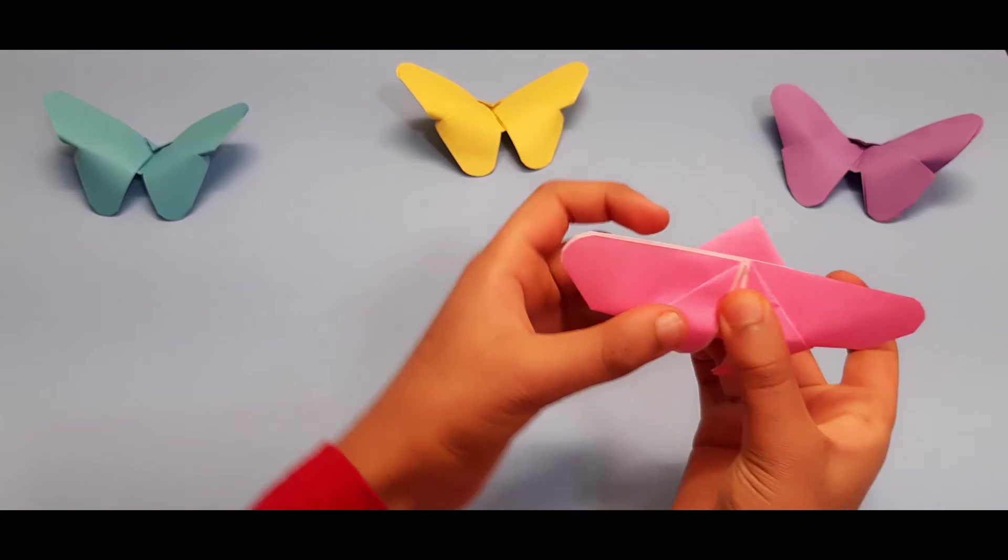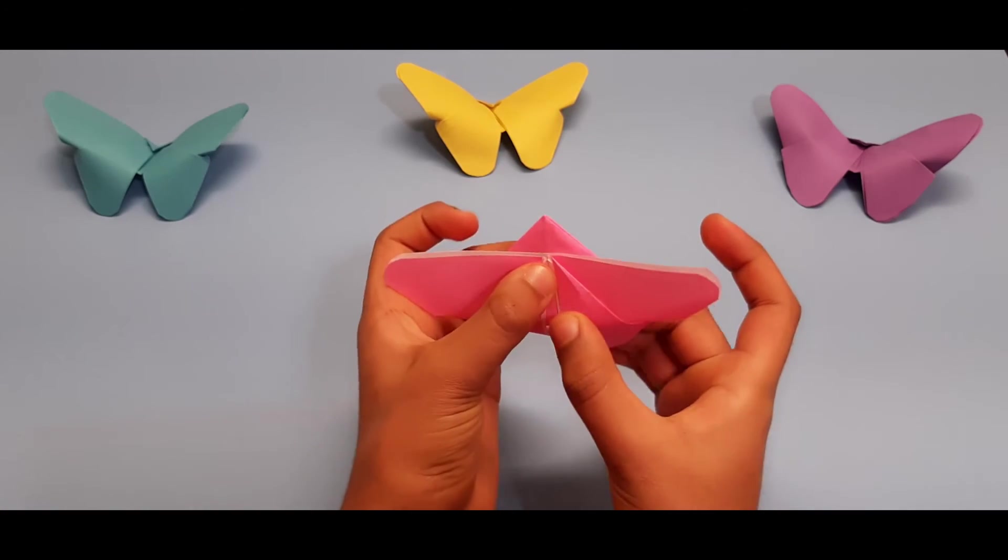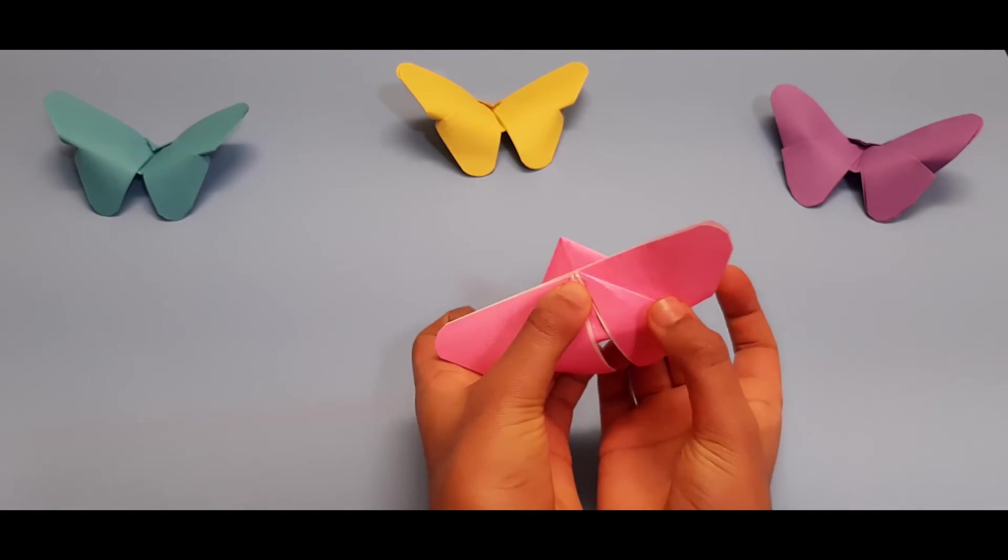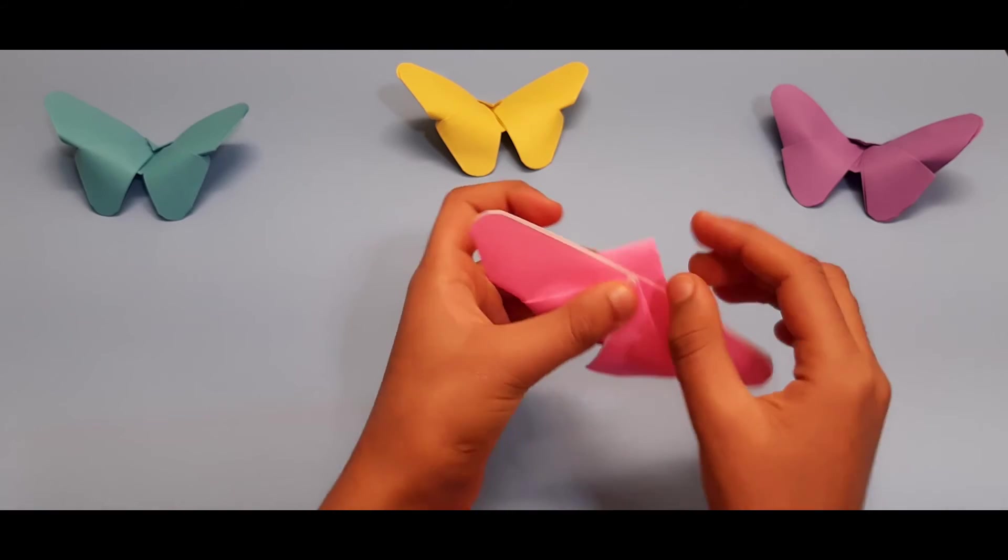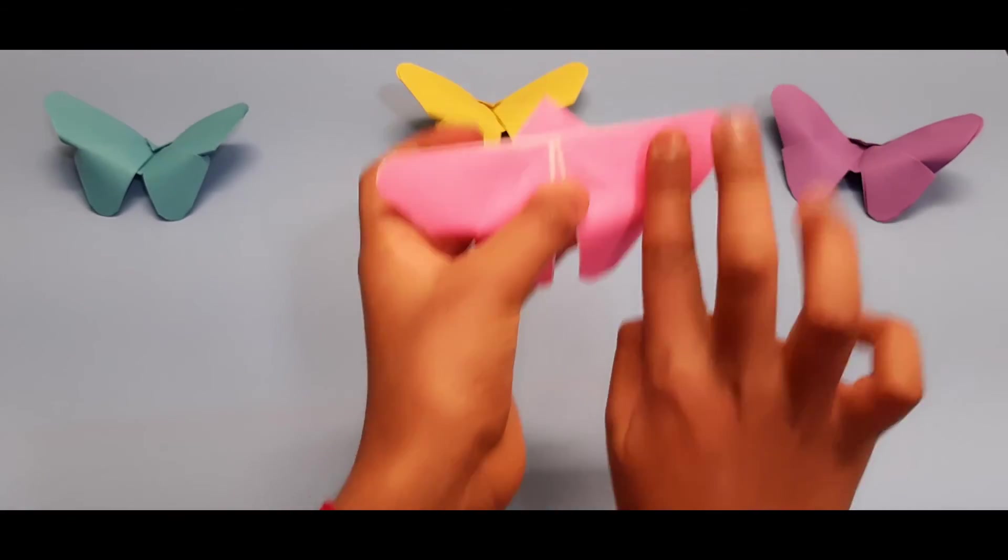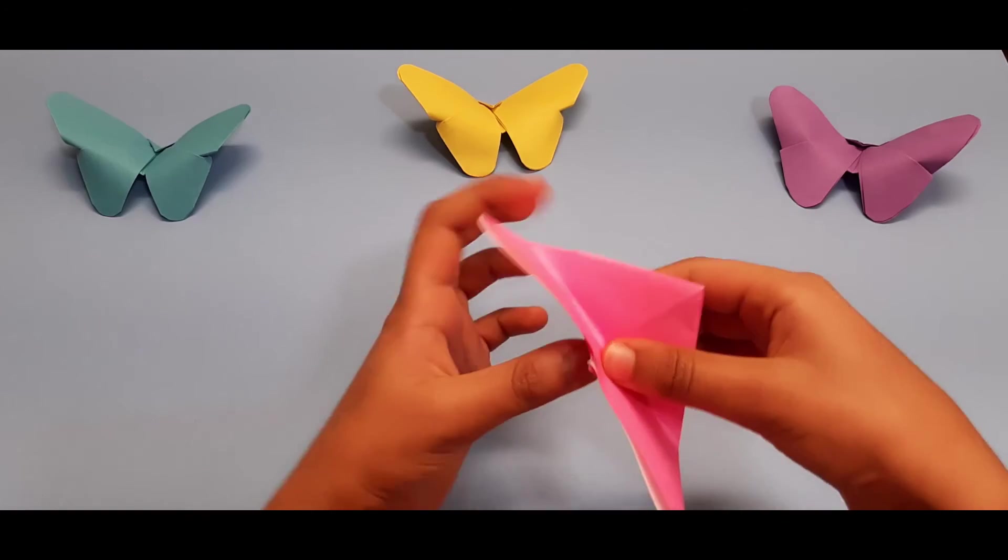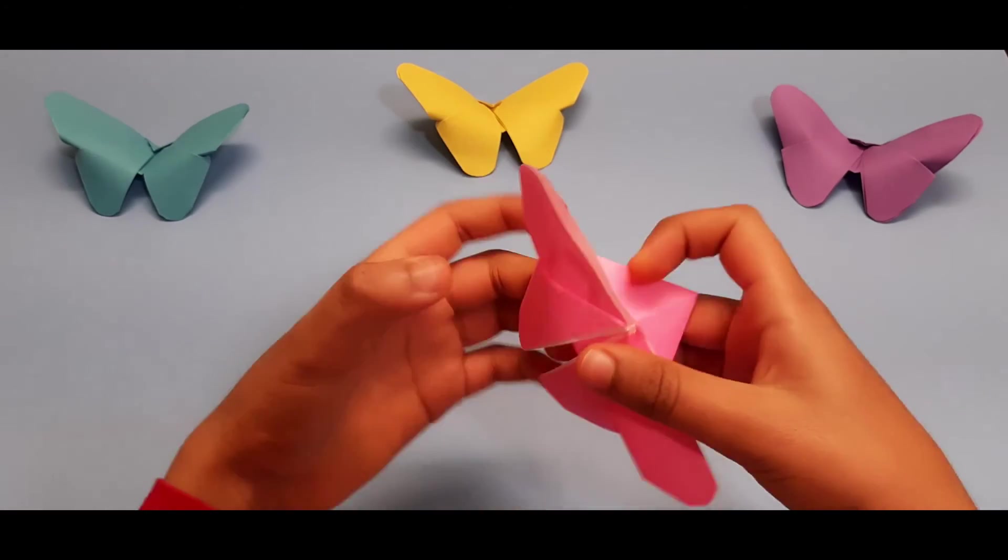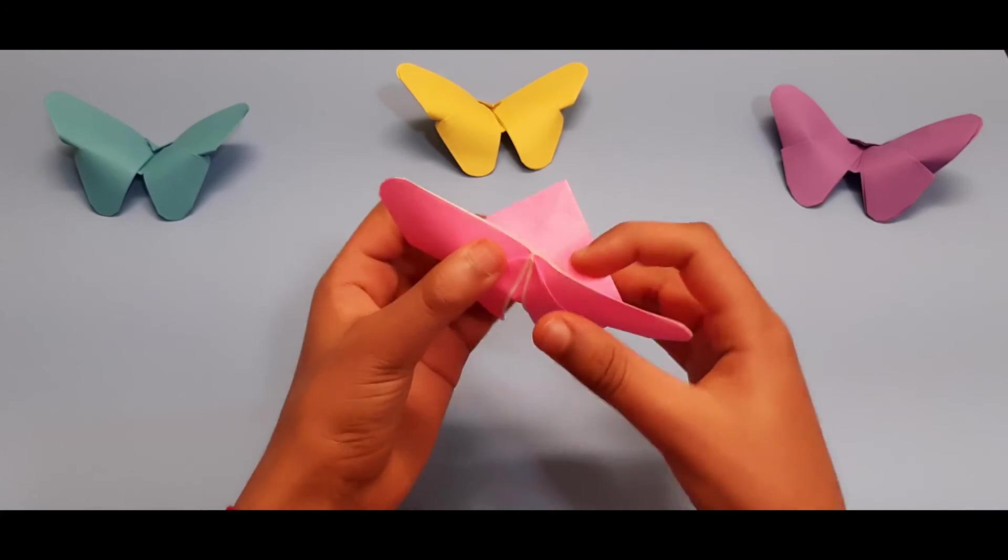You can give it a crease there, and if it doesn't look like these wings are bending enough, you can give it a little bit more of a tug so that the butterfly's wings bend.